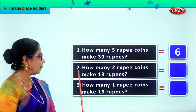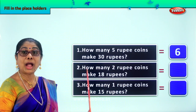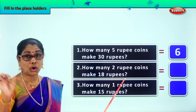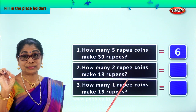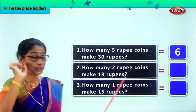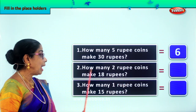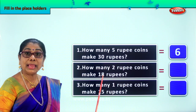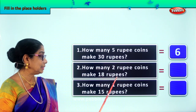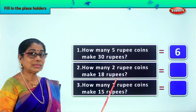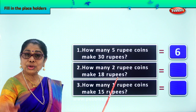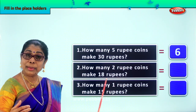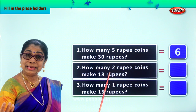How many 2-rupee coins? How many 2-rupee coins make 18 rupees? So 2 rupees — how many do we need to make 18 rupees? Again, now say the 2 times table up to 30.